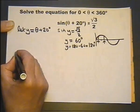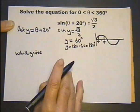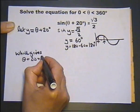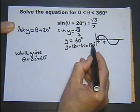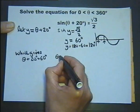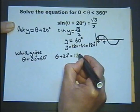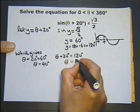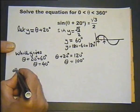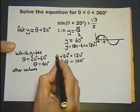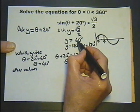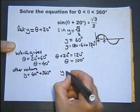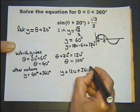Now these two results — when I substitute back that y is in fact theta plus 20 — y being 60 means that theta plus 20 is 60, and y being 120 means that theta plus 20 is 120. Subtracting 20 from both sides gives theta equals 40, and subtracting 20 from the other gives theta equals 100. But are there other possible values? If we consider another complete cycle, y could also be 60 plus 360 or y could be 120 plus 360.